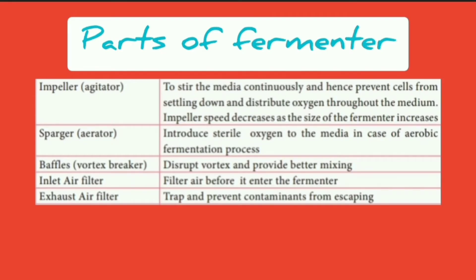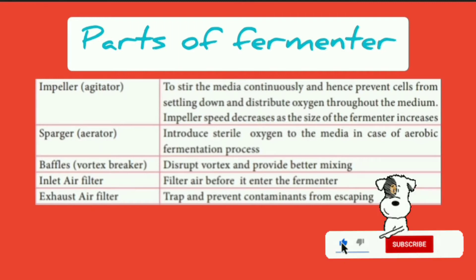Welcome to my YouTube channel. Today I'm going to talk about different parts of a fermenter. The very first and important part is the impeller, or as we call it, an agitator. This agitator or impeller is used to stir the media continuously so that it can prevent the cells from settling down, as well as distribute oxygen throughout the medium.